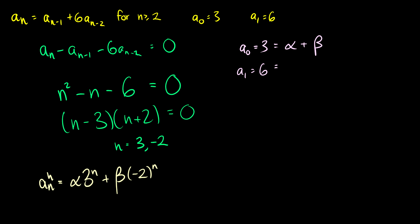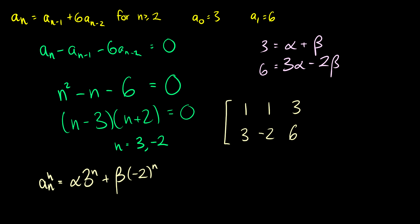Plugging in n = 1: 6 = 3·alpha minus 2·beta, since we have alpha times 3^1 and beta times (−2)^1. Let's write this as a matrix: [1, 1 | 3] and [3, −2 | 6]. The first column represents alphas, the second column betas, and the third column is the constant. I recommend watching the first few videos in the linear algebra series for the matrix method.